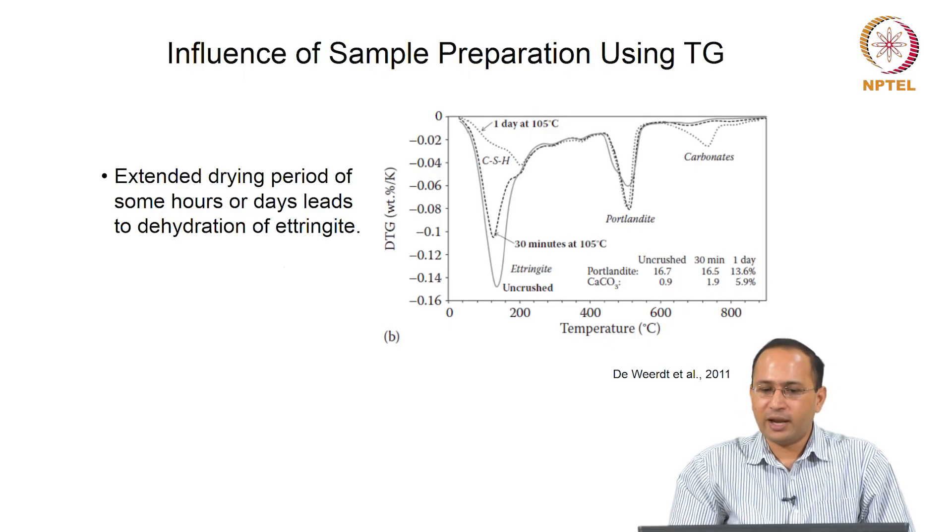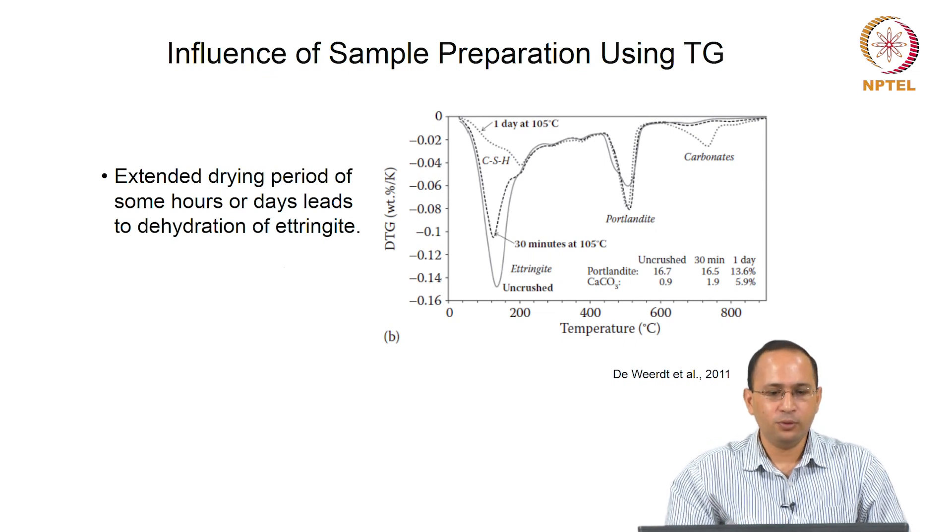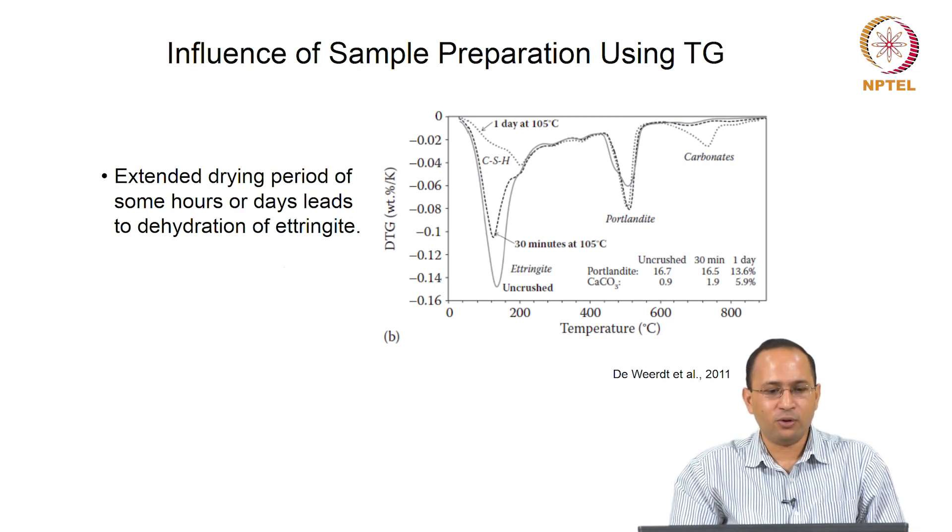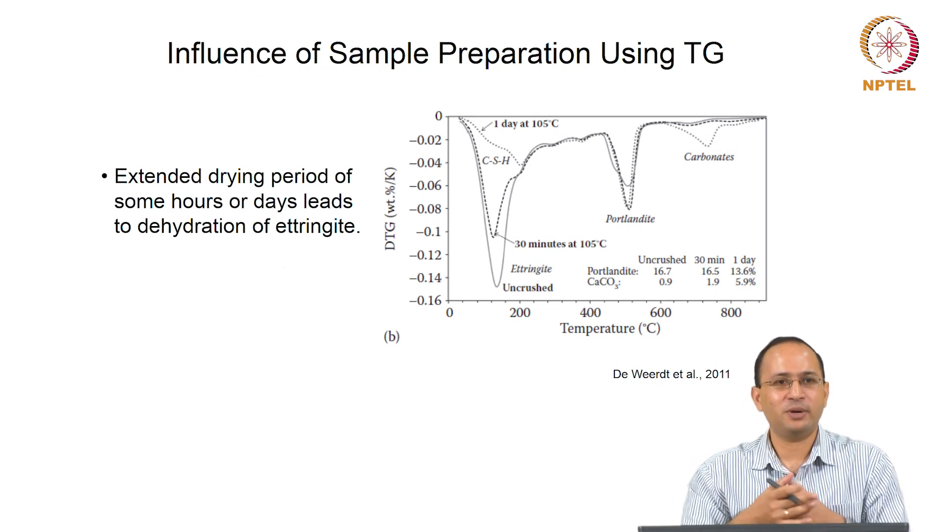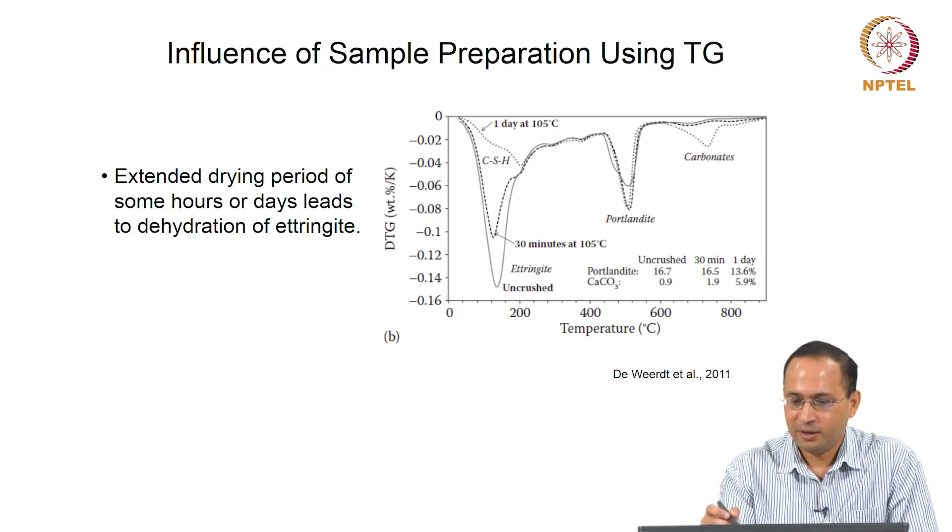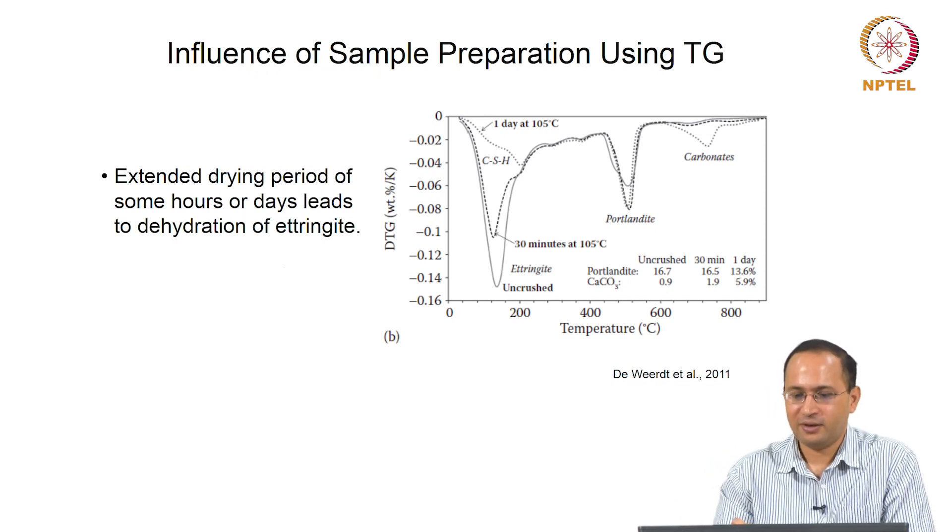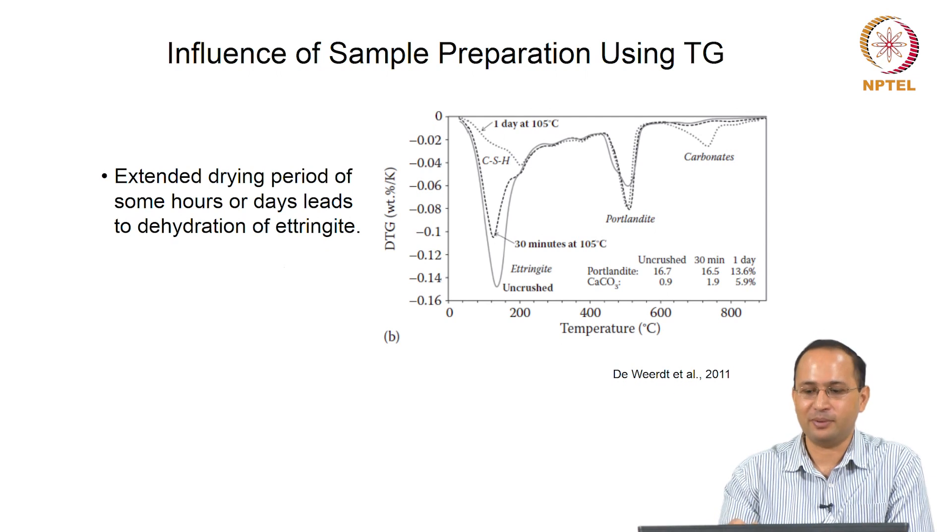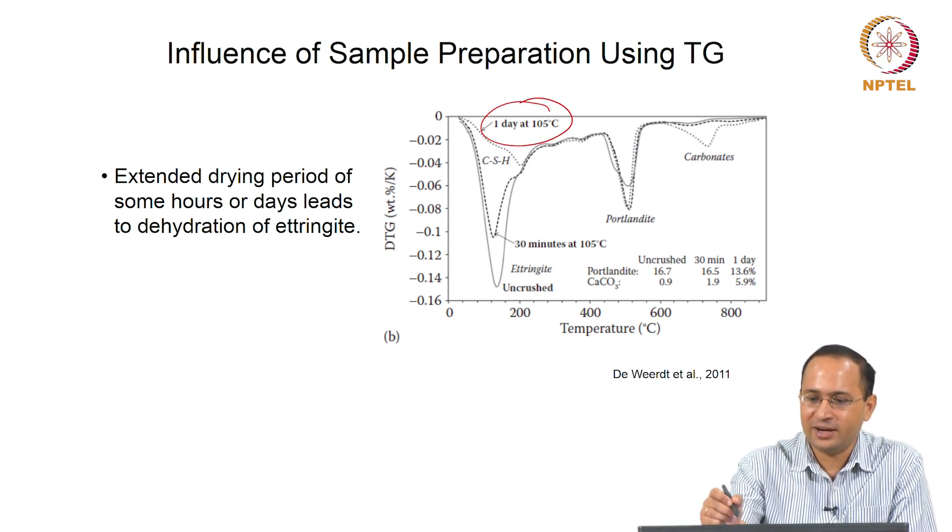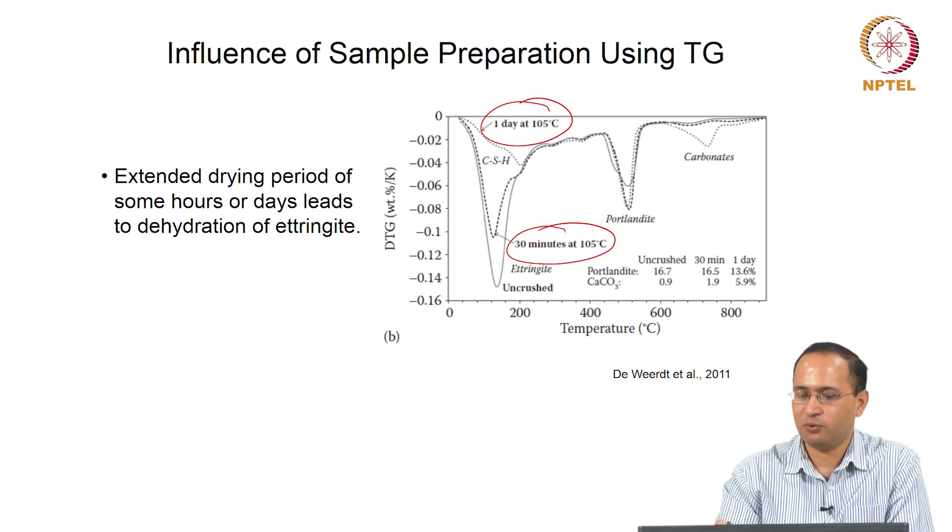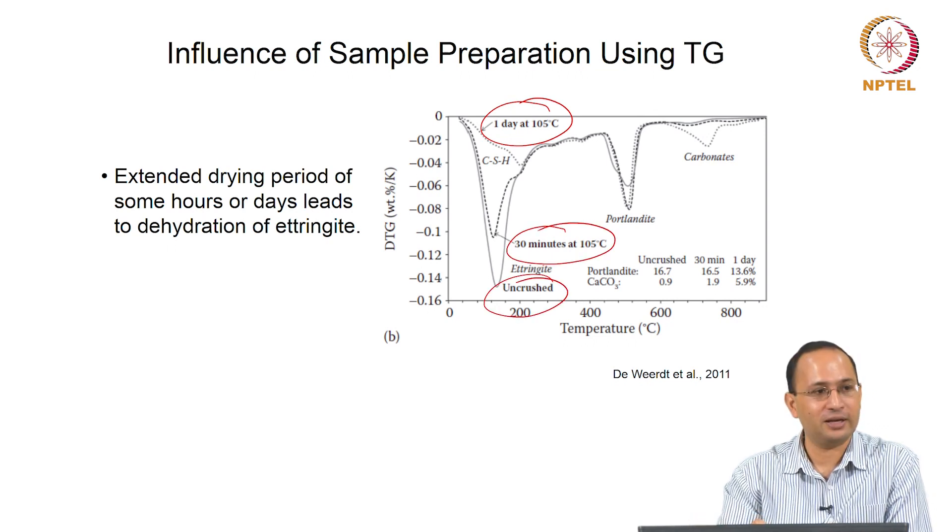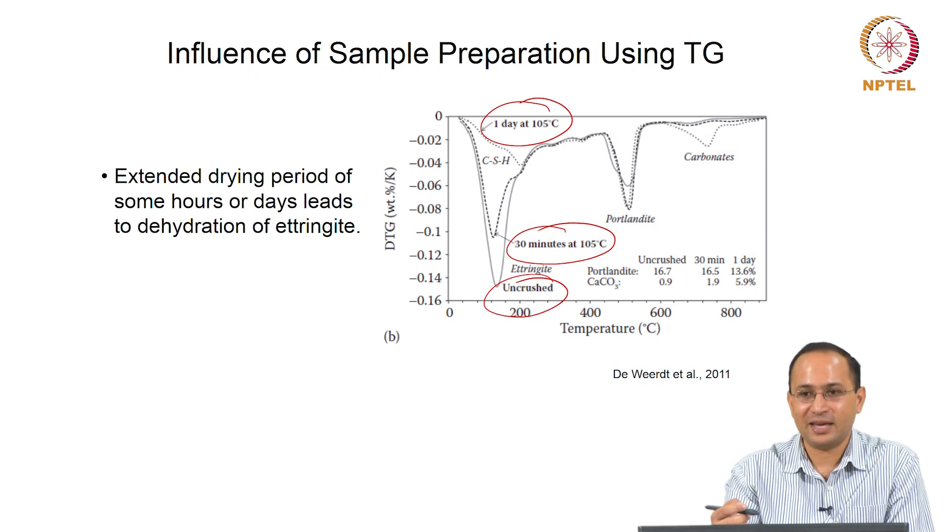Also, we can use thermogravimetry to find out the influence of sample preparation. It depends on the material. For example, if you want to evaluate the effect of drying, what happens when you dry the sample? So these effects can be evaluated.